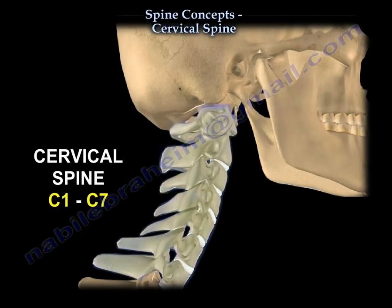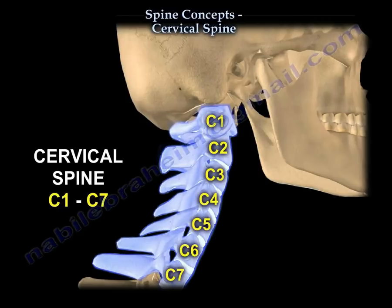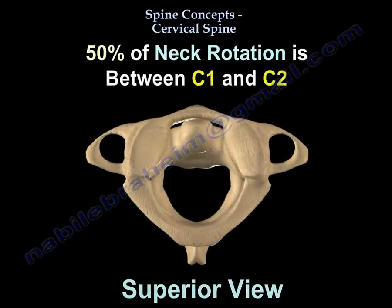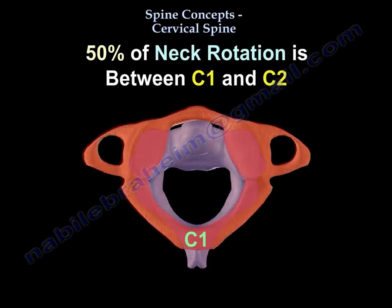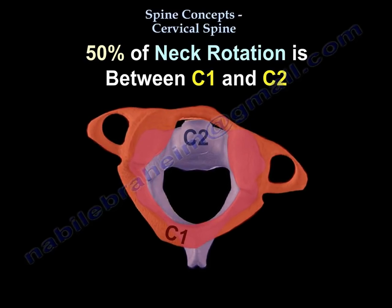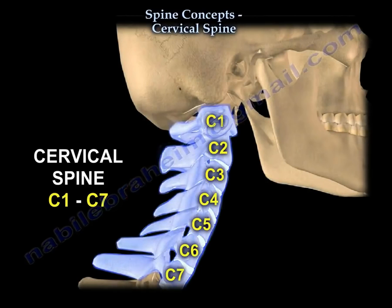Regarding rotation of the c-spine: about 50% of rotation occurs at C1 and C2. For flexion and extension of the c-spine, most motion occurs at C4 and C5.